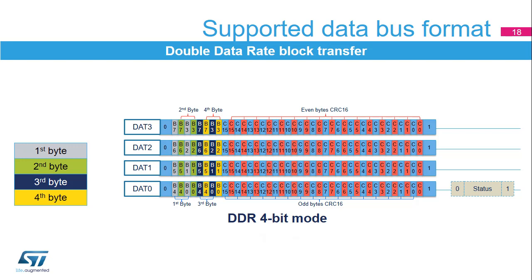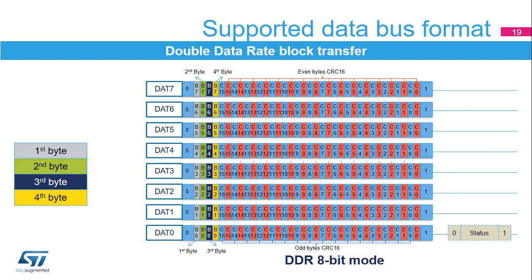When data is sent to the card, the card will return a full-cycle CRC status on the SDMMC D0 pin. Double data rate mode is not available in 1-bit mode. In this example, the 4 bytes are sent over the SDMMC bus in double data rate 8-bit mode. For each SDMMC CK clock cycle, 2 bits are shifted out with a full block cycle start bit and end bit, and odd and even CRC-16 checksums on each data line. When data is sent to the card, the card will return a full-cycle CRC status on the SDMMC D0 pin.